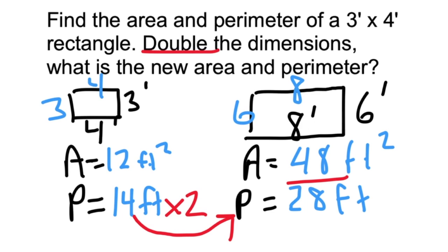But if you notice the area is not double the original area. Instead, because we multiplied both the width and the length by two, to change 12 into 48 we have to multiply it by 2 squared which is 4. 12 times 4 is 48.